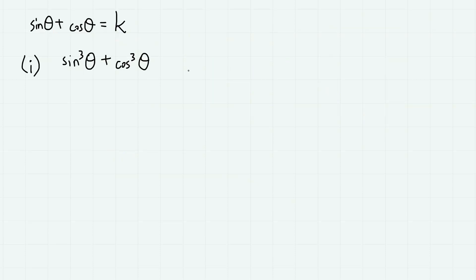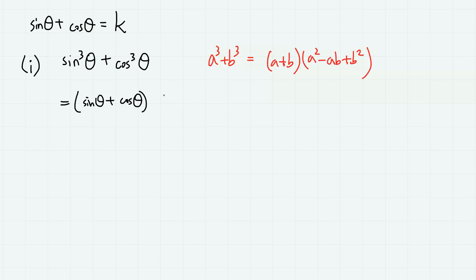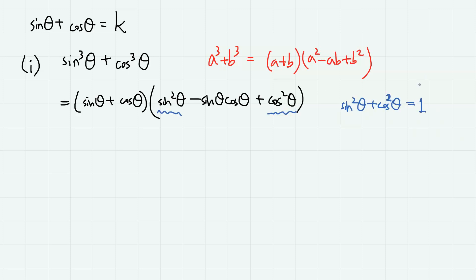So first, sine cube theta plus cosine cube theta. Here we apply the famous factorization formula for the sum of cubes: a cube plus b cube equals a plus b, times a square minus ab plus b square. Applying this, we have sine theta plus cosine theta, times sine square theta minus sine theta cosine theta plus cosine square theta. Here, sine square theta plus cosine square theta equals 1, and sine theta plus cosine theta is k.